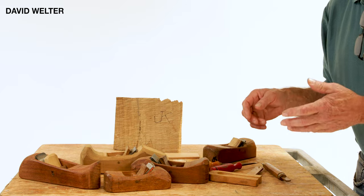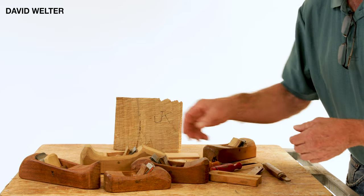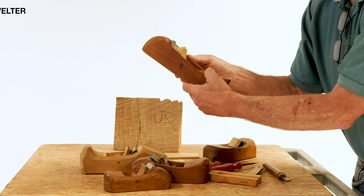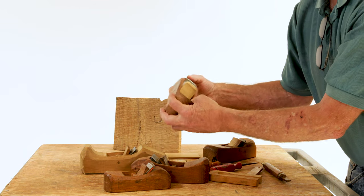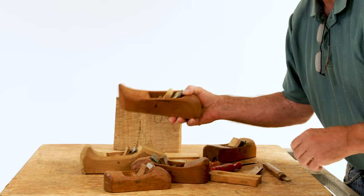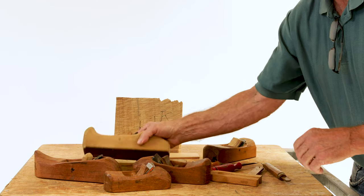These are made from one chunk of wood. They're sawed in three pieces, and the blade fits in there with a wedge to tighten it up.